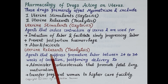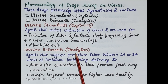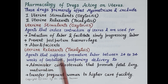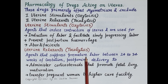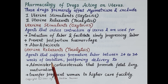The second category of drugs acting on the uterus are uterine relaxants, also called tocolytics. 'Toco' refers to childbirth and 'lytics' refers to agents that prevent, so tocolytics are agents that prevent childbirth. They are used for postponing the delivery and suppress premature labor between 24 to 34 weeks of gestation.